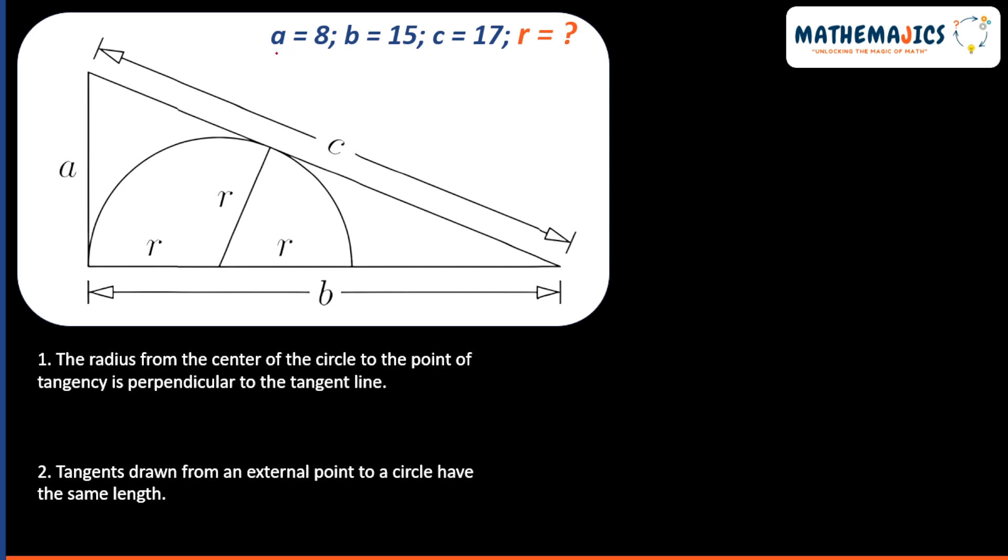In this question, A is given as 8, B is given as 15, and C is given as 17, and we need to find the value of R. R is the radius of this semicircle.